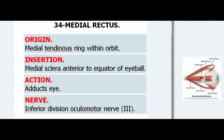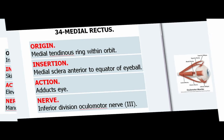34. Medial Rectus. Origin: Medial tendinous ring within orbit. Insertion: Medial sclera anterior to equator of eyeball. Action: Adducts eye. Nerve: Inferior division of oculomotor nerve (III).